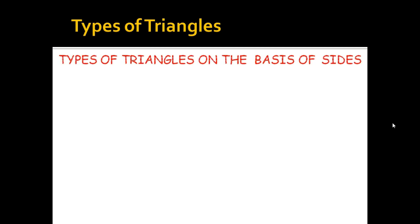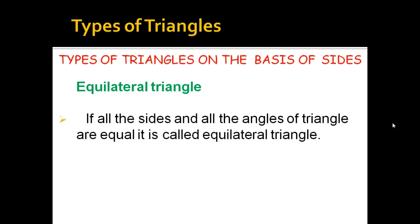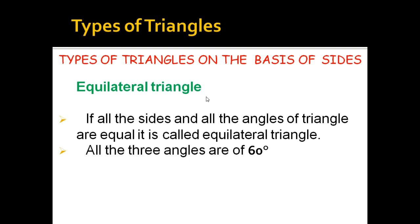Now the types of triangles based on sides. The first is the equilateral triangle. As the name suggests, it is a triangle in which all sides and all angles are equal. Remember: all three angles of an equilateral triangle are 60 degrees. For example, if one side is 5 cm, all three sides are 5 cm.